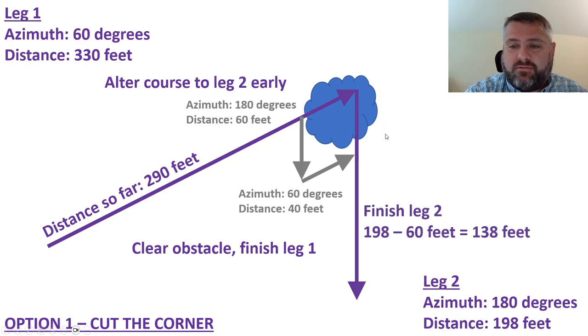If you've cut the corner now, finished leg two, they knew that over here they did the first 60 feet of it. So 198 feet minus 60 feet you go 138 more feet and hopefully you should arrive right down here at the correct end of leg two.